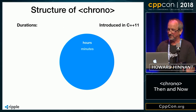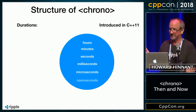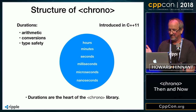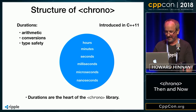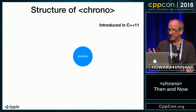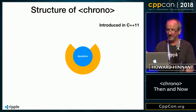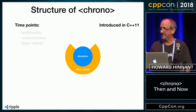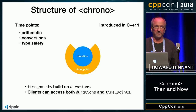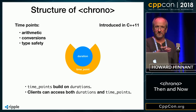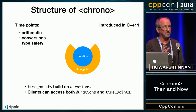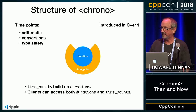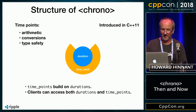In C++11, chrono was introduced. At the heart of chrono are these durations — hours, minutes, milliseconds, et cetera. Chrono also added time points in C++11. Time points work such that if you subtract two time points, you get a duration, or if you add a duration to a time point, you get another time point. It's a great little algebra built into the language, and if you get the algebra wrong, the compiler will tell you — it's not a runtime error.